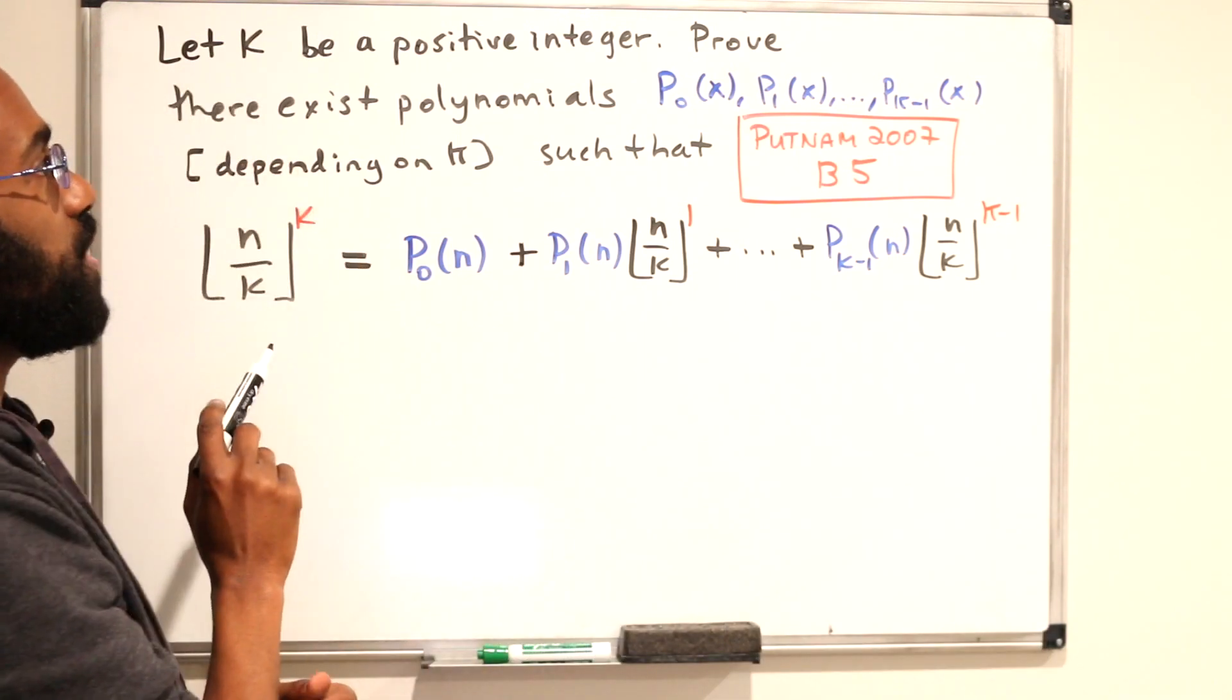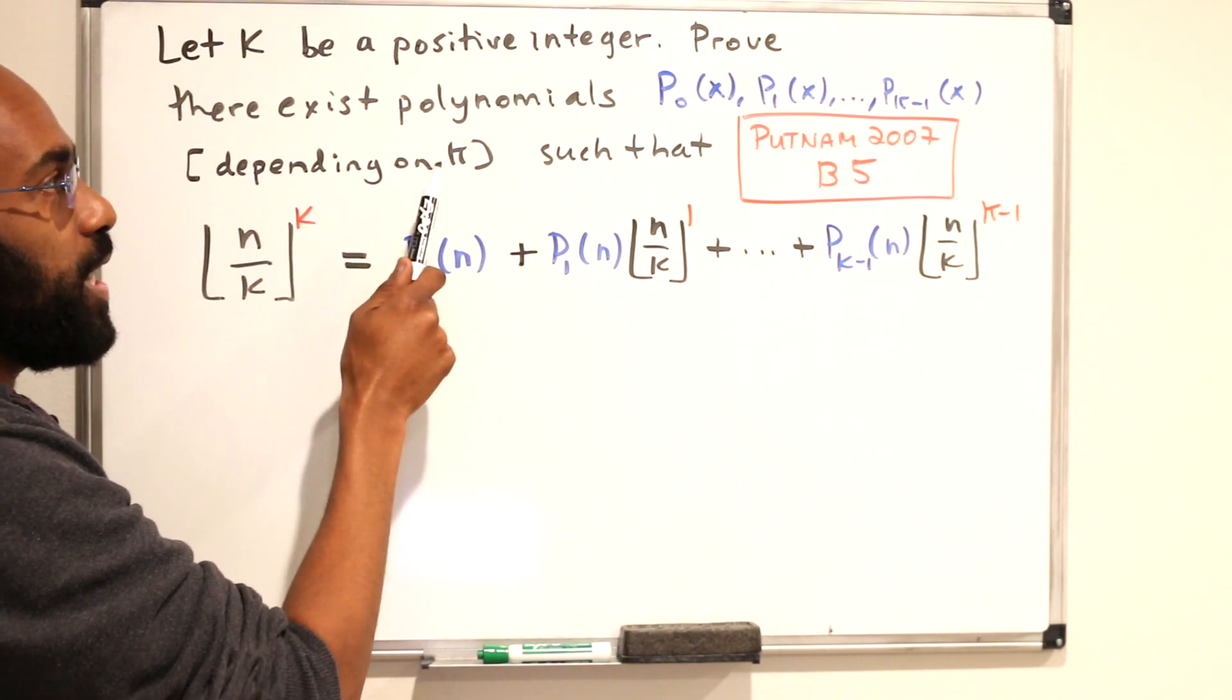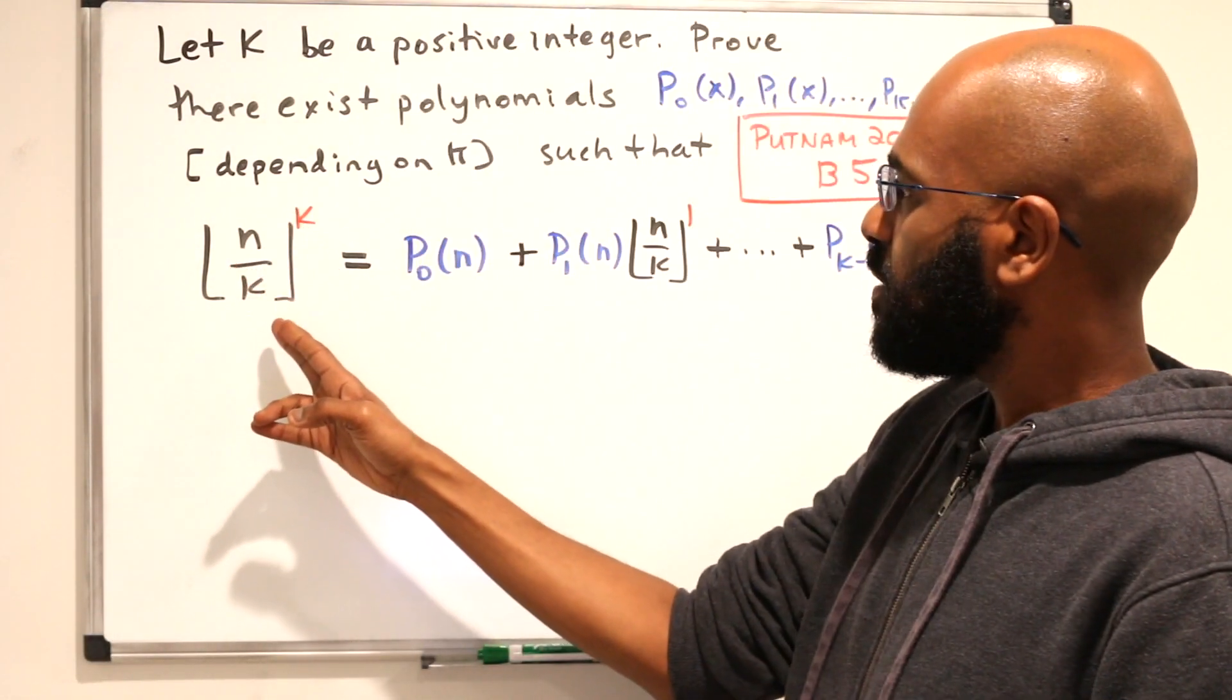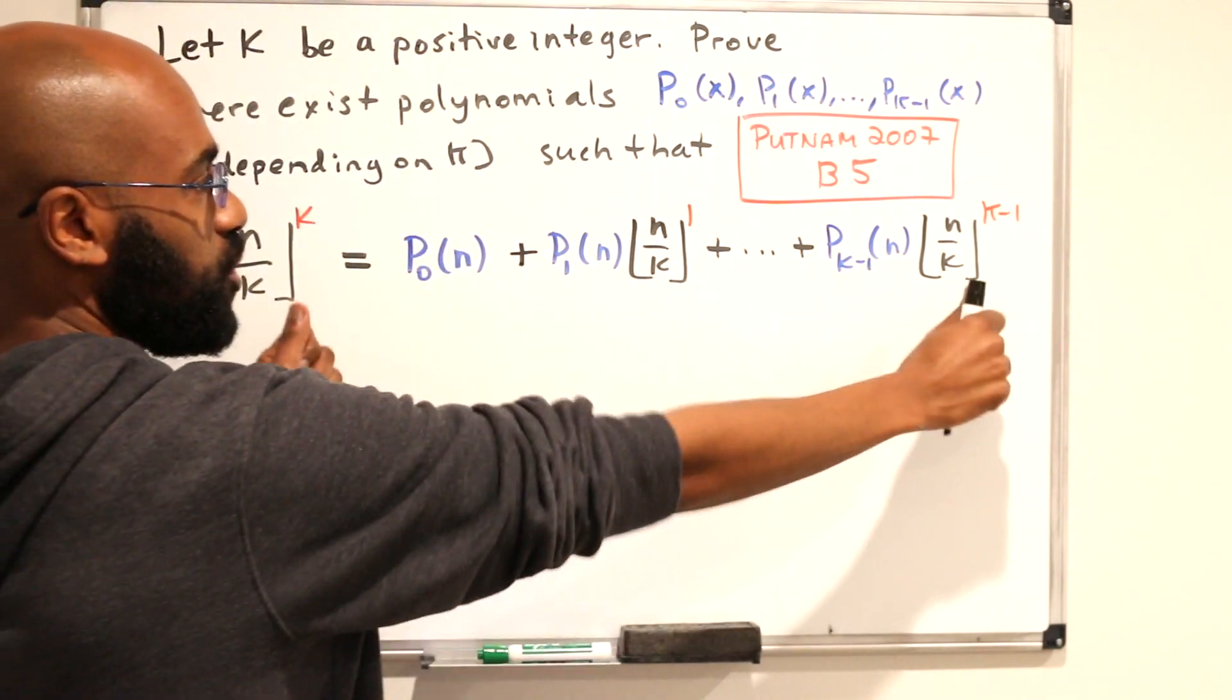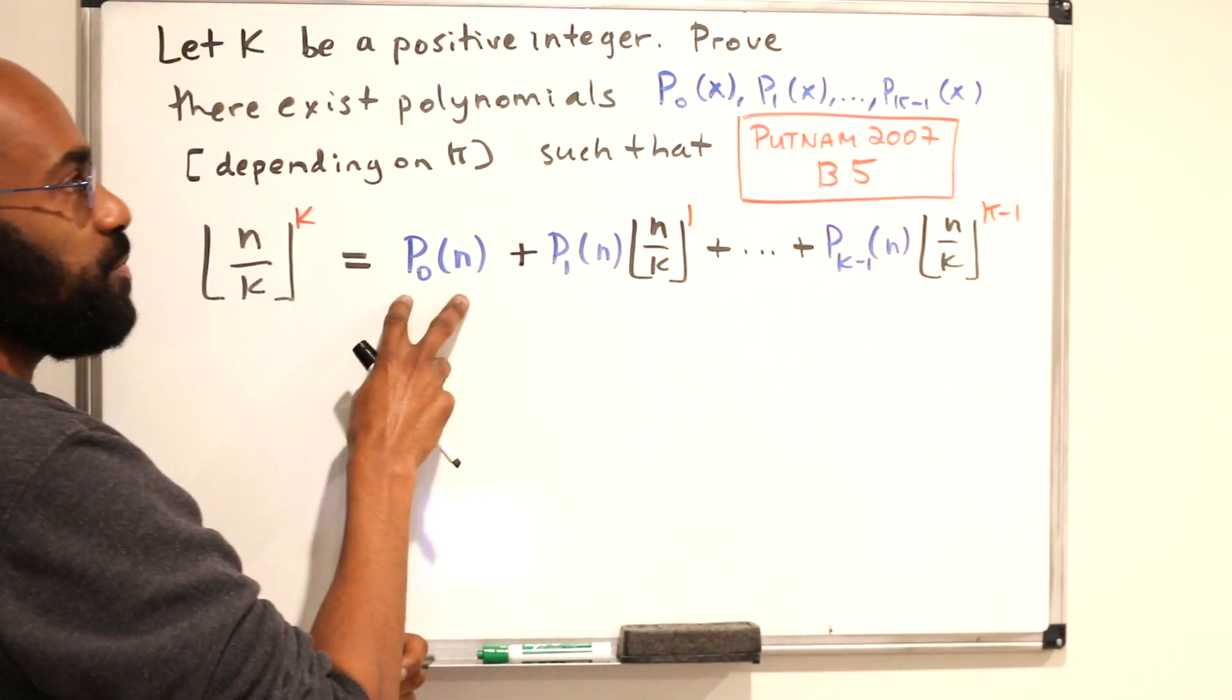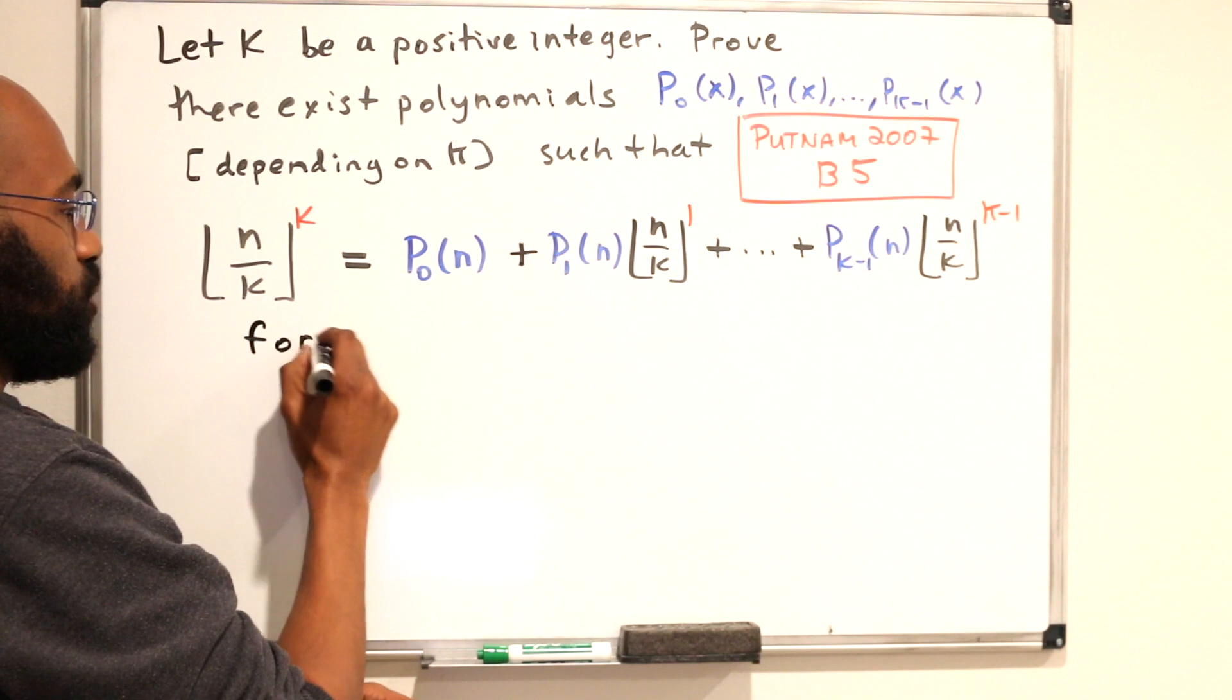So it asks, let k be a positive integer. Prove you can find polynomials, k of them, each of which might themselves depend on k, so they might have k involved in their expressions such that when you take the floor of n over k and raise it to the k, you get it as a combination of powers of the floor of n over k from 0 up to k minus 1 multiplied by these polynomials evaluated at this n that we put in here. And this must be true for all integers n.